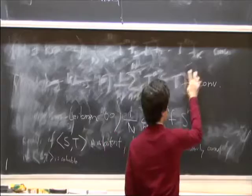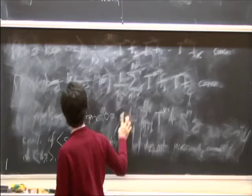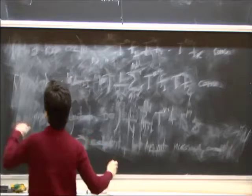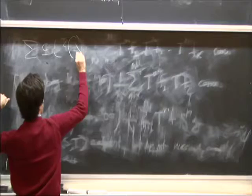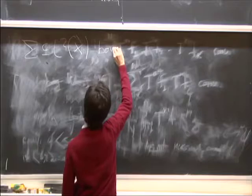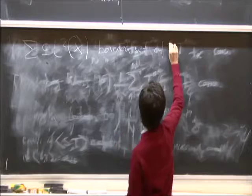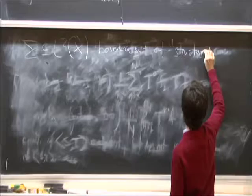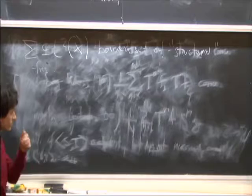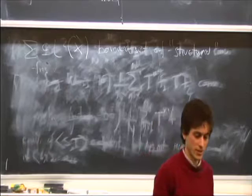Let me discuss something very classical: the structure-randomness idea in a very abstract context. We are in L². You take some set Σ in L², which is your bounded set of structure functions—whatever that means. Structure can mean whatever you want. The idea is precisely that: you have some problem, you decide what the structure is for your problem, and you want to decompose your function into something that looks like that structure and something that does not look at all like it.